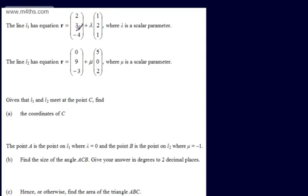Let's have a quick look at these lines. They are in the form R = A + λD, which is a vector equation of a line, where A is the position vector and D is the direction vector. These are given in column form, but they might also appear in IJK notation, e.g. 2i + 3j - 4k + λ(i + 2j + k), or equivalently (2 + λ)i + (3 + 2λ)j + (-4 + λ)k.